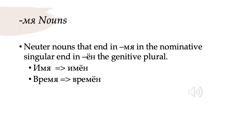Our next class of nouns are neuter nouns ending in -мя. Those are going to end in -мён in the genitive plural. So имя, first name, becomes имён in the genitive plural; время, time, becomes времён in the genitive plural.